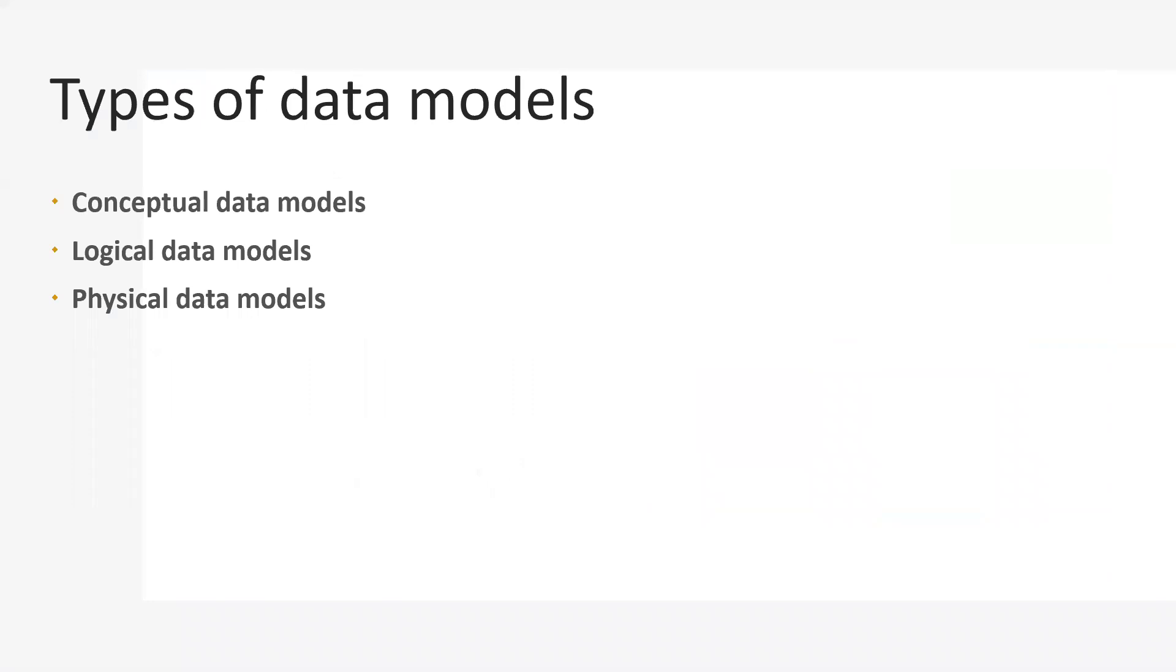Let's talk about types of data models. There are three types of data models: one is conceptual data model, second is logical data model, and third is physical data model.